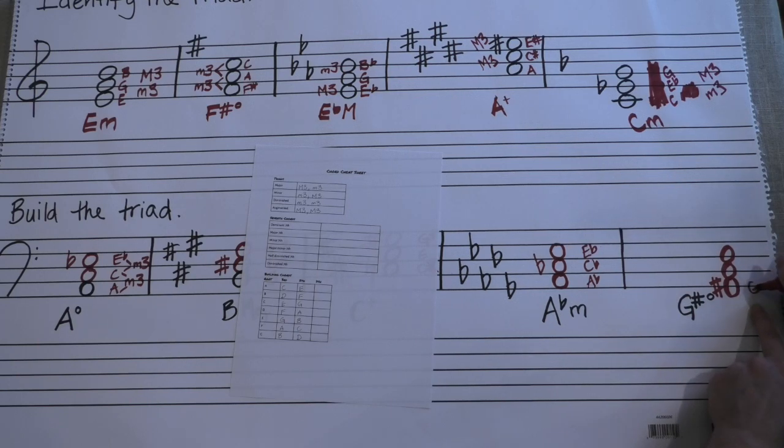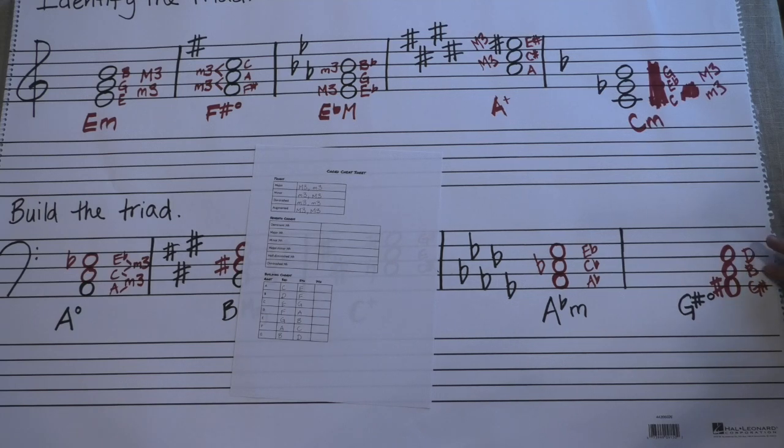So we have a G sharp. We have a B. And we have a D. From here to here, we have a minor third. Check. Good. We need B to D to be a minor third. Check. It is. So you're good to go. This is your G sharp diminished chord.